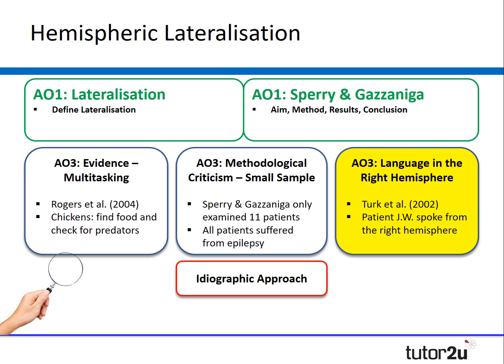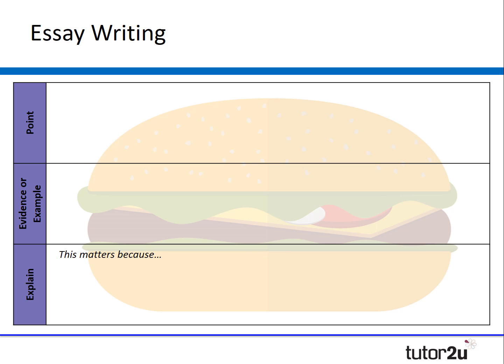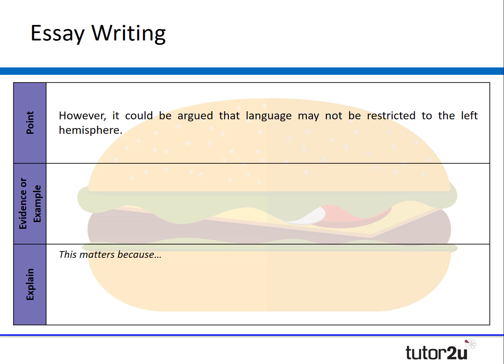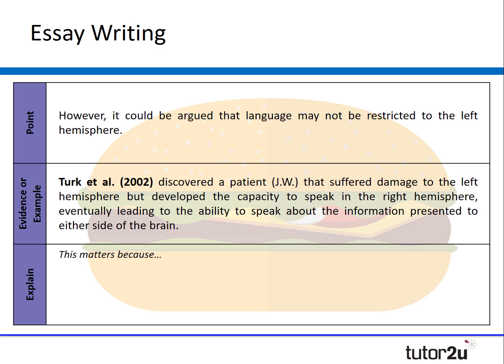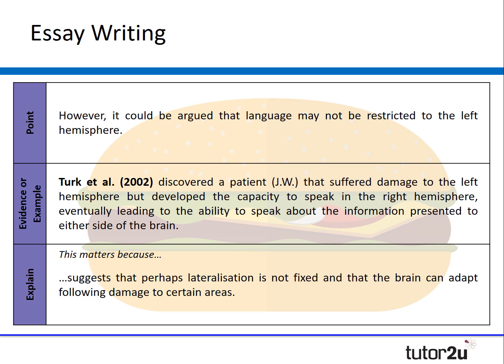Finally, the third evaluation point: the idea that language can also appear in the right hemisphere. It could be argued that language is not just restricted to the left hemisphere. Turketau discovered a patient, JW, who suffered damage to the left hemisphere but developed the capacity to speak from the right hemisphere, eventually leading to the ability to speak about information presented to either side of the brain. This matters because it suggests that lateralisation is not fixed, and that the brain can adapt following damage to certain regions.